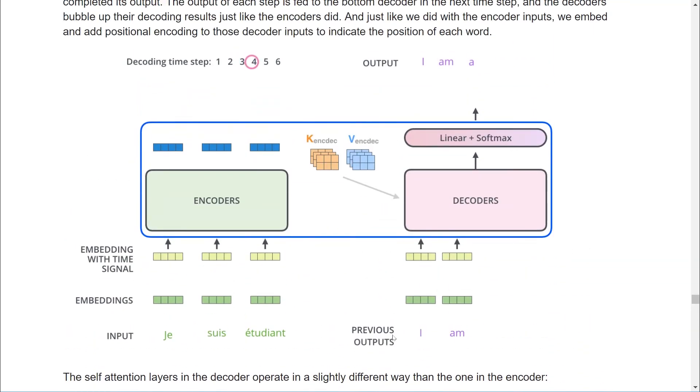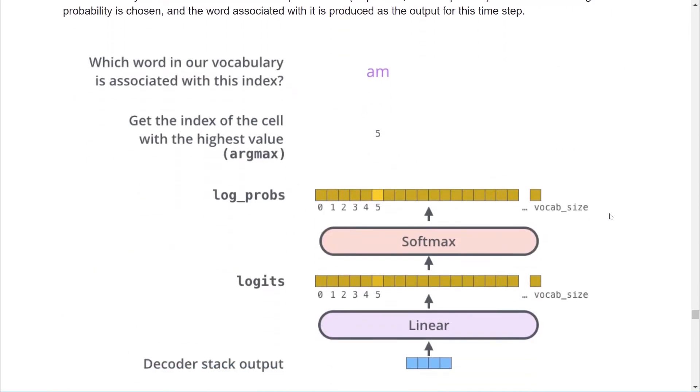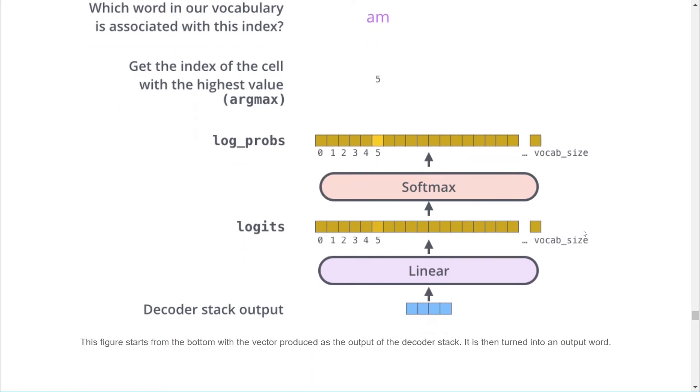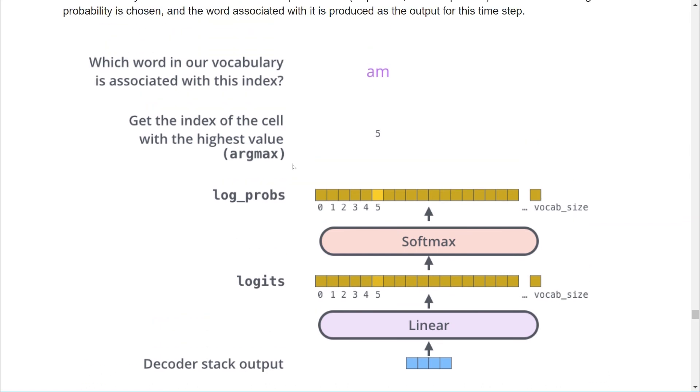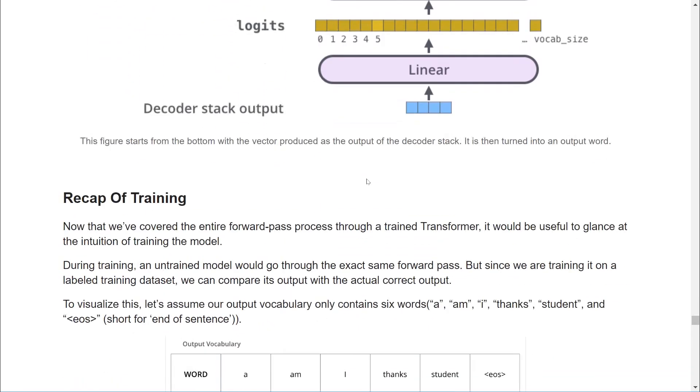Output words are now generated one at a time until a special EOS or end-of-sentence token is reached. The final layer of the decode stack outputs a vector of floats. How do we use this to generate a word? We've got an output layer the size of the vocabulary. Most models use tens of thousands of words, so it's a pretty big layer, which generates a value called a logit for every possible word. A softmax function then transforms these into probabilities, which add up to one across all possible words. We then choose the word with the highest probability using the argmax function.